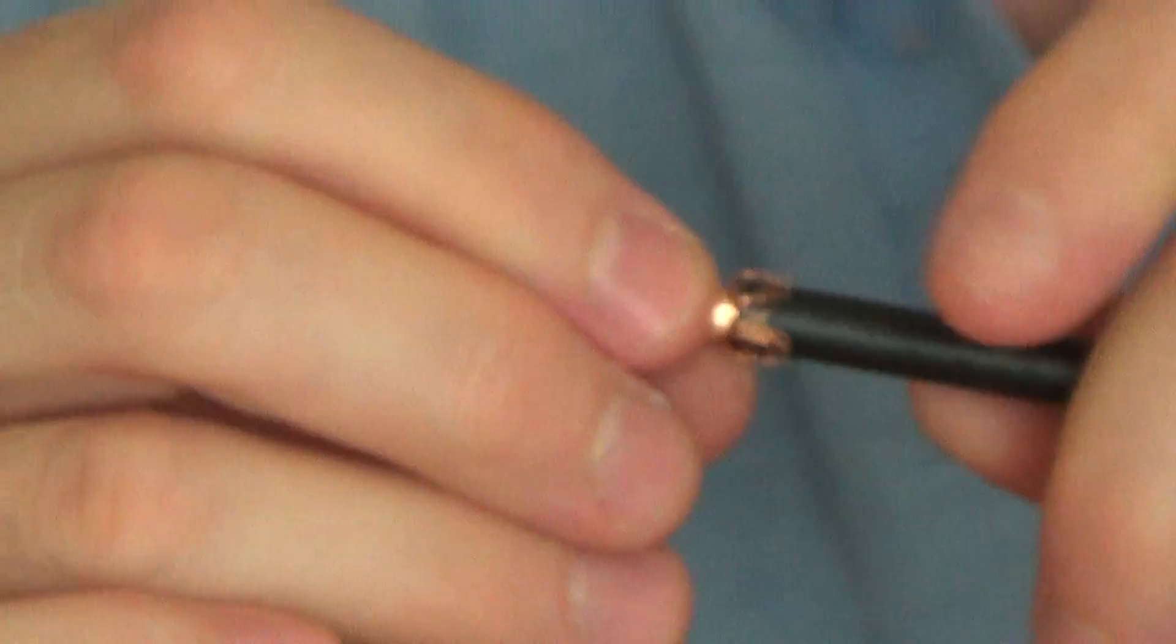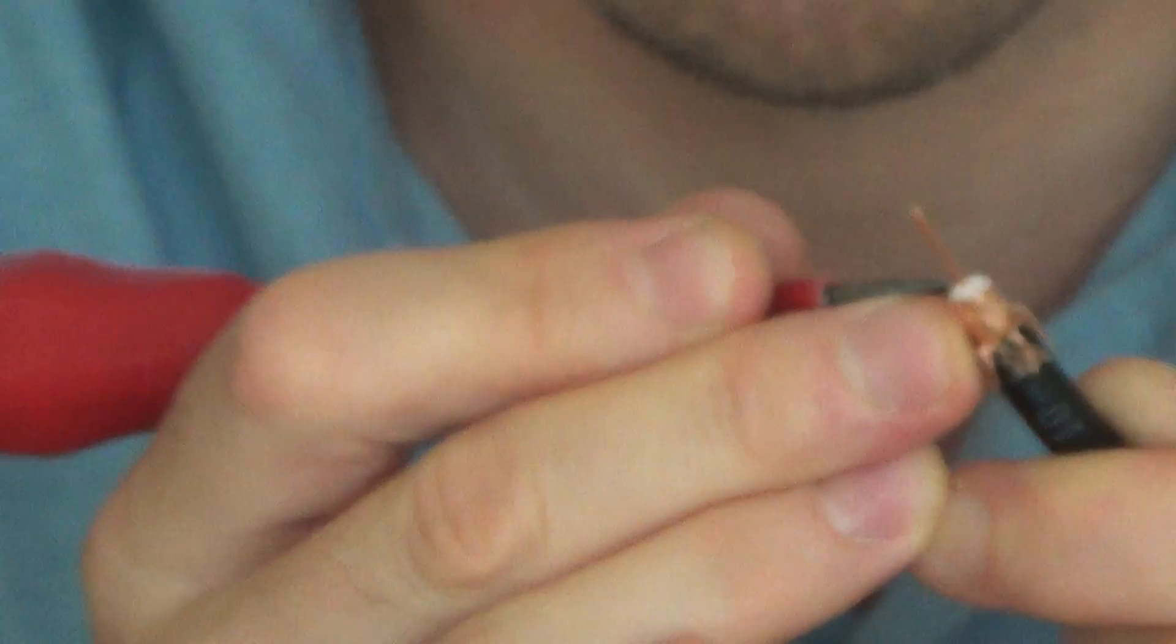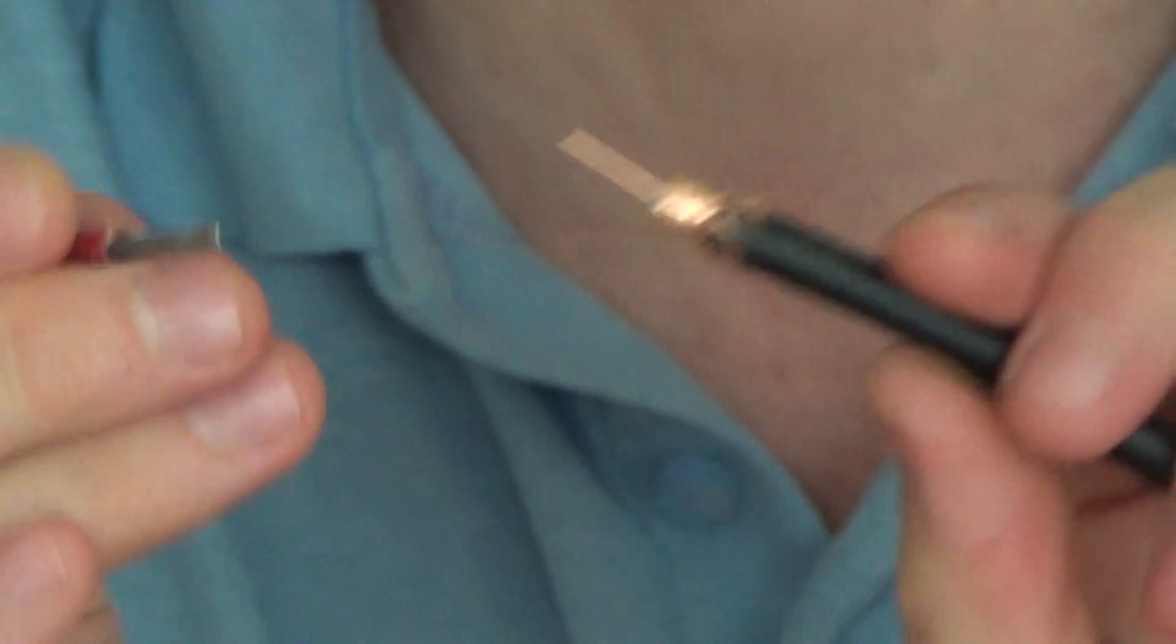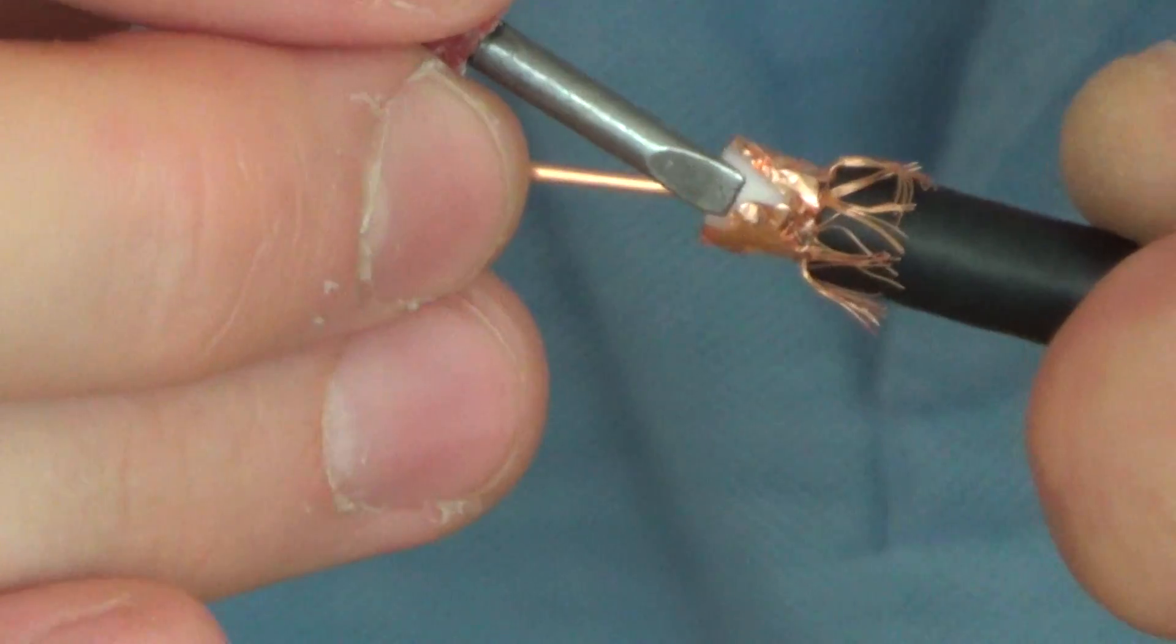Next thing we have to do is we have to get rid of this foil. Now sometimes it can be easy and it would just peel straight off, but basically you want to kind of find where it overlaps. So if you have a little small screwdriver, sometimes you can easily find the overlap. So there we go. Right, I've found the overlap here now. If you can zoom in on that, hopefully you'll see it.